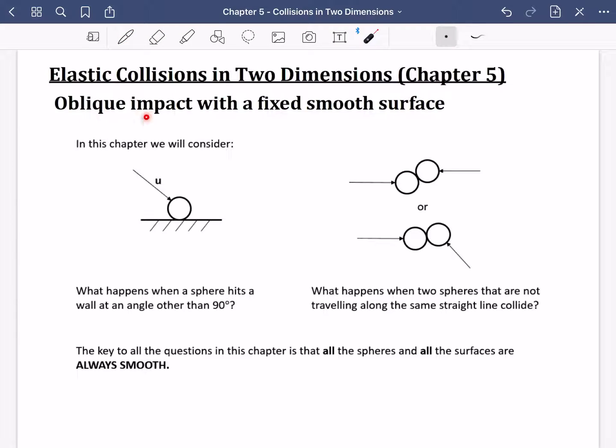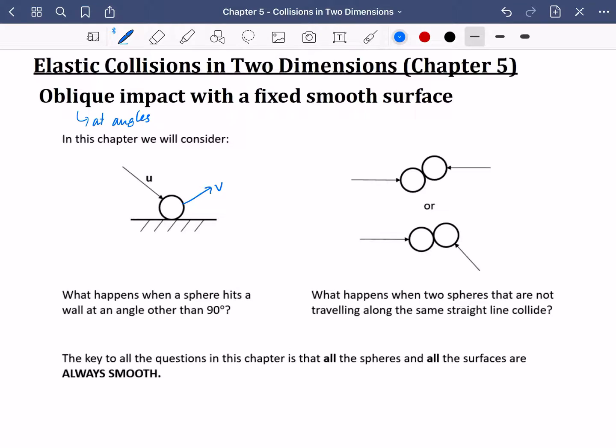So we're going to be looking at oblique impact with a fixed smooth surface. Oblique means at angles. So one of the things we're going to look at is a ball that is travelling at an angle like this, and it hits a fixed wall like this, and you can imagine what's going to happen. It's going to come along, and then it's going to bounce off at a different kind of angle that we have there. So that's really what we're answering. What happens when a sphere hits a wall at an angle other than 90 degrees?